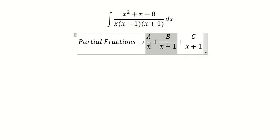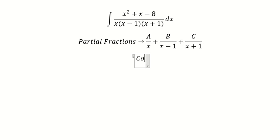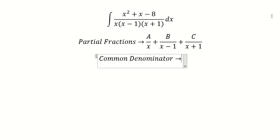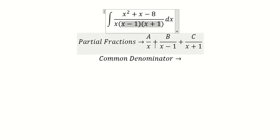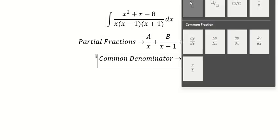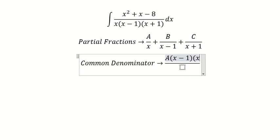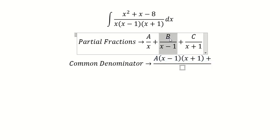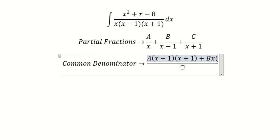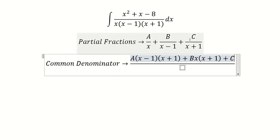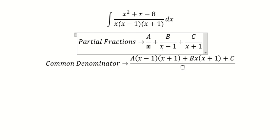The next step, we need to do the common denominator. For the A term, it is missing x minus 1 and x plus 1, so capital A is multiplied by (x minus 1)(x plus 1). For the B term, it is missing x and x plus 1, so capital B is multiplied by x and (x plus 1). And the last one is missing x and x minus 1.